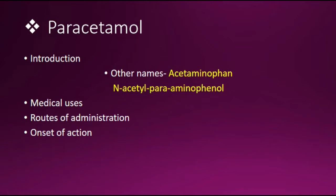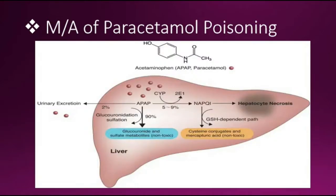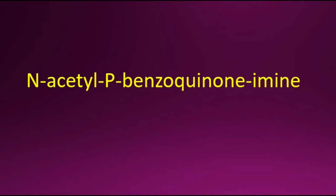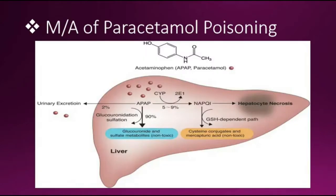Now I will talk about the mechanism of action of paracetamol poisoning. Metabolism mostly occurs in the liver. By glucuronidation and sulfation it is excreted by urine, but in overdose this pathway becomes saturated and forms a more toxic metabolite which is NAPQI — N-acetyl-P-benzoquinone-imine. Normally it is produced in small amounts, but in paracetamol overdose it is not effectively detoxified by the liver, so it decreases the liver's glutathione and causes severe damage to the liver, ultimately causing hepatocyte necrosis.